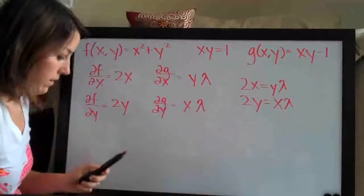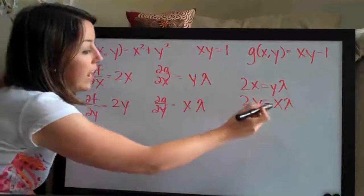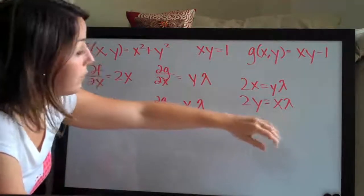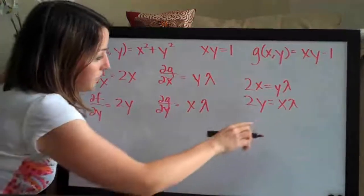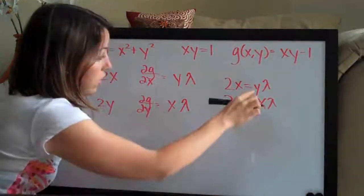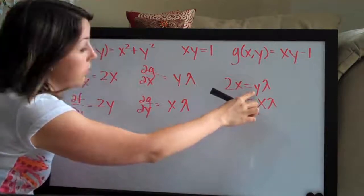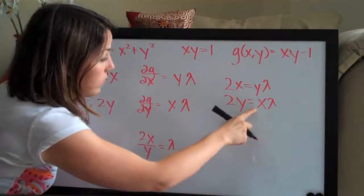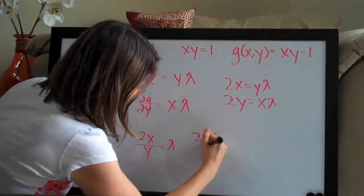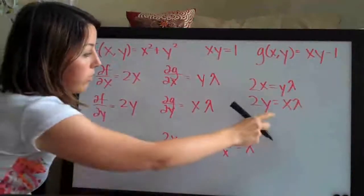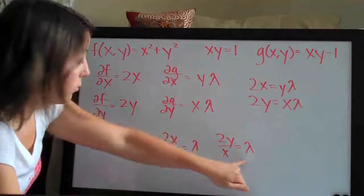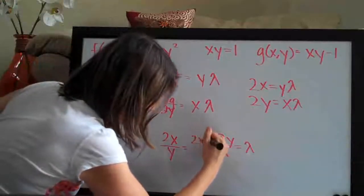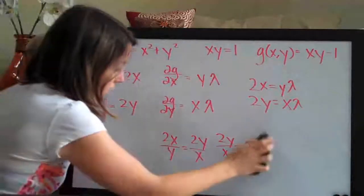There's our system of equations. Now we want to solve both of these for lambda so that we can ultimately set them equal to each other. For the first equation, we divide both sides by y, so y cancels on the right and we get 2x over y equals lambda. For the second, we divide both sides by x, so we get 2y over x equals lambda. Now since both equal lambda, we set them equal to each other: 2x over y equals 2y over x.